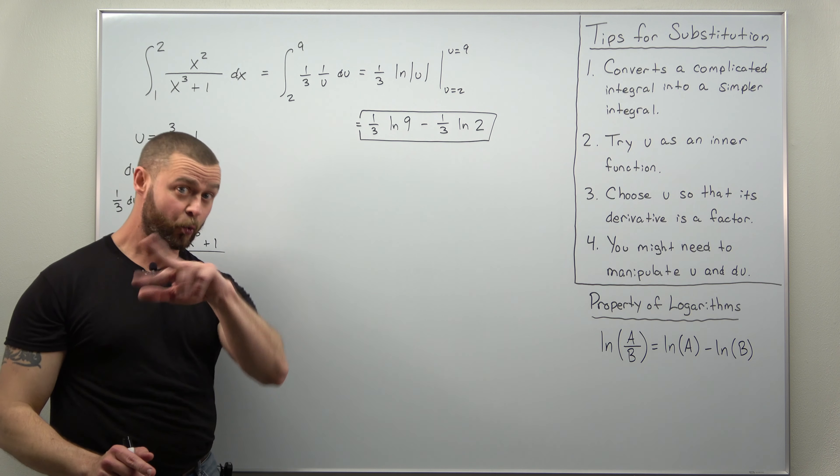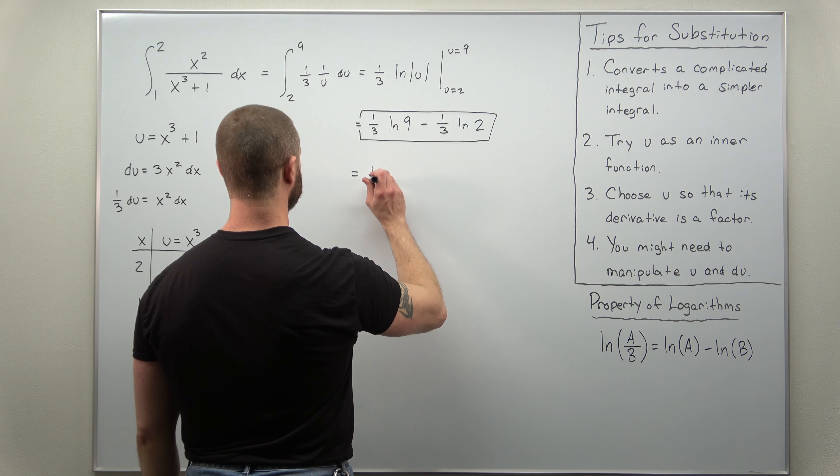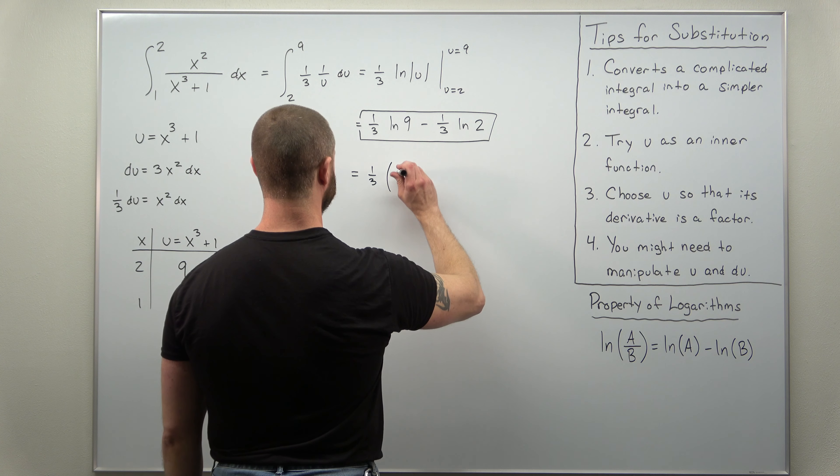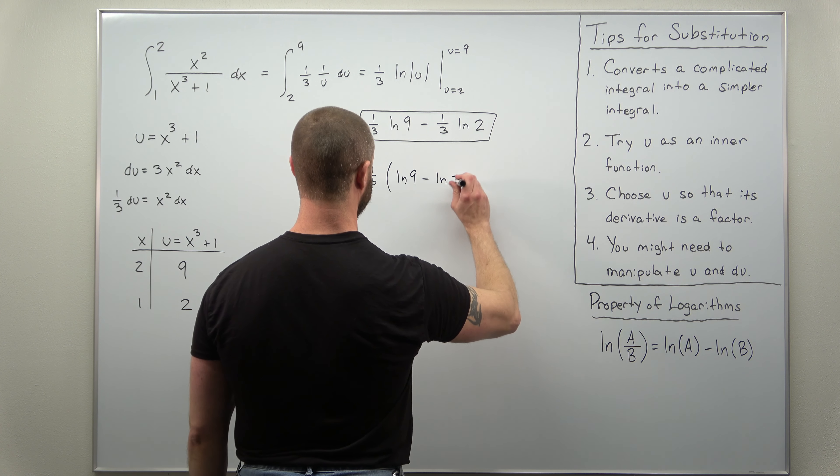First you can factor 1 third out from both terms. You could have done that right from the beginning. So you could write this now as 1 third times natural log of 9 minus natural log of 2.